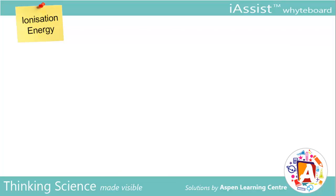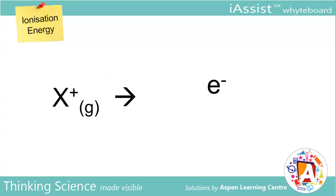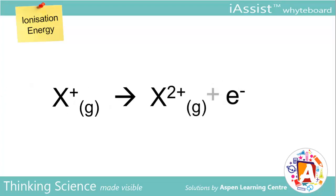Now that we've understood the graph of first IEs, what about second IEs? A vital point to note is that second IE, unlike first IE, is defined as the amount of energy required to remove one mole of electrons from a mole of gaseous 1+ cations to form a mole of 2+ cations.